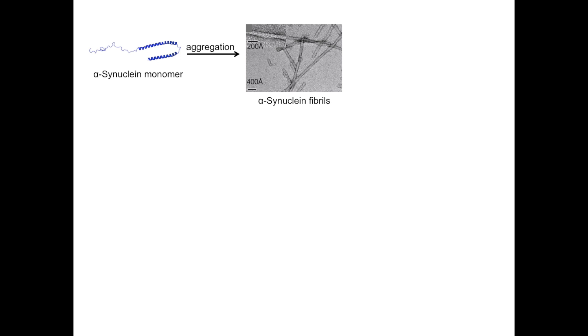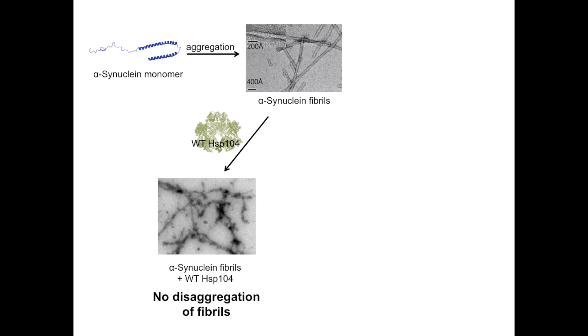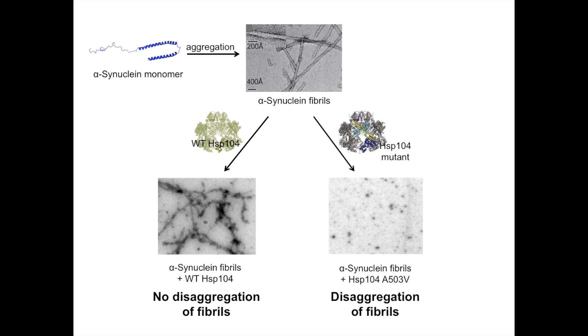When alpha-synuclein fibrils were incubated in the presence of wild-type HSP-104, the fibrils remained aggregated. However, when the fibrils were incubated in the presence of the HSP-104-A503V mutant, electromicroscopy revealed that these alpha-synuclein fibrils were disaggregated.